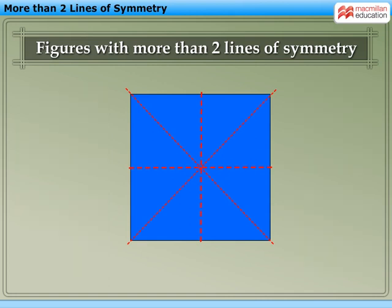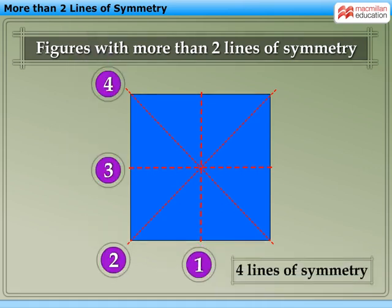Hence, we can say that the given piece of square paper is symmetrical along four lines of symmetry.